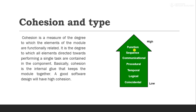Now the other term is cohesion. Cohesion means the degree to which the elements of a module are functionally related. It is the degree to which elements directed toward performing a single task are contained in the component. Basically, cohesion is the internal glue that keeps the module together. A good software design will have high cohesion.